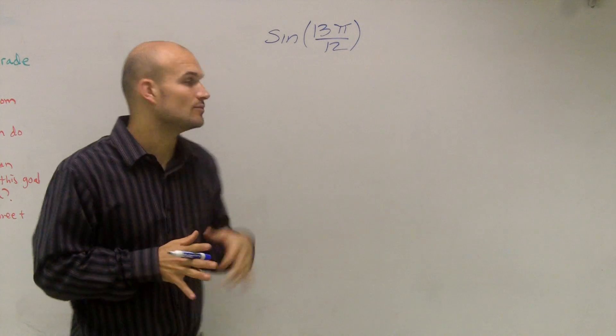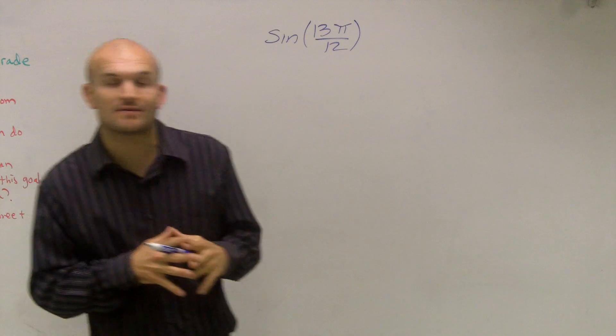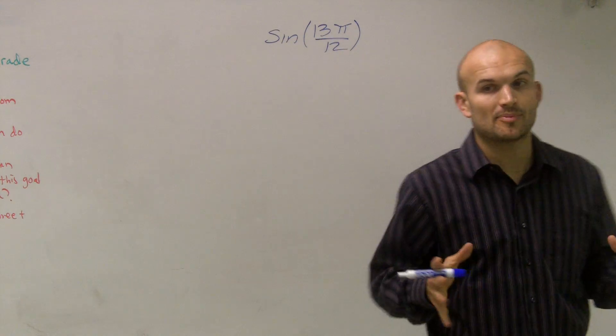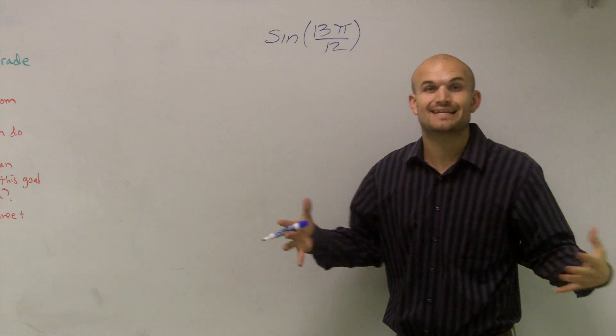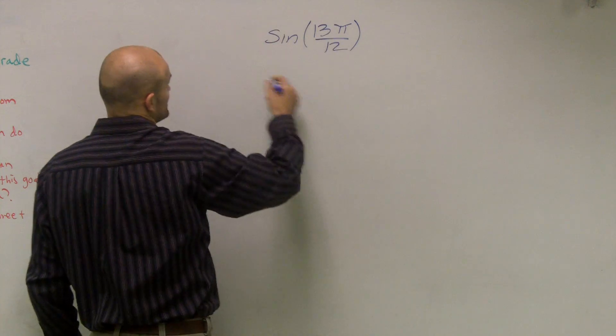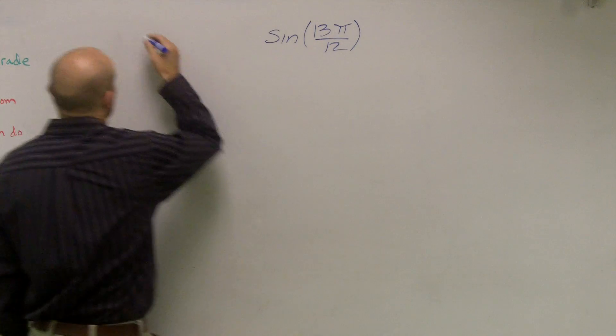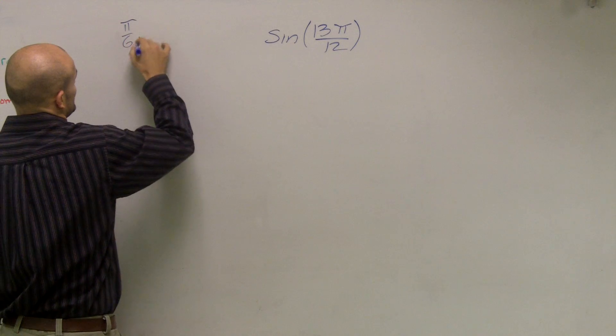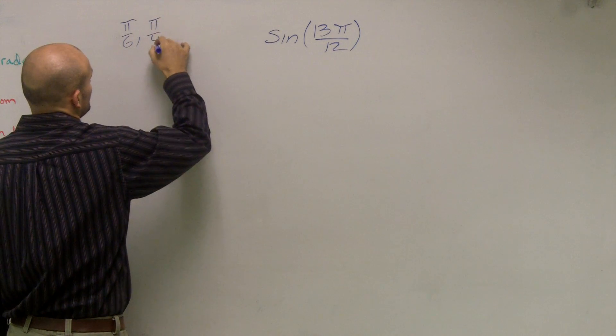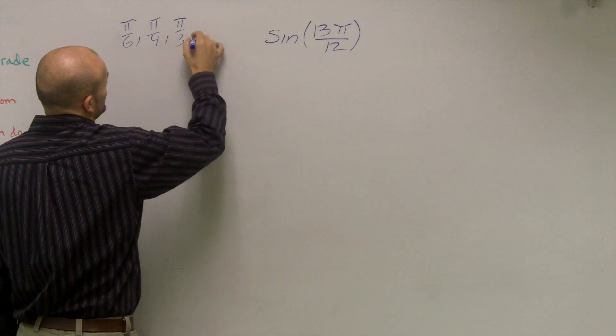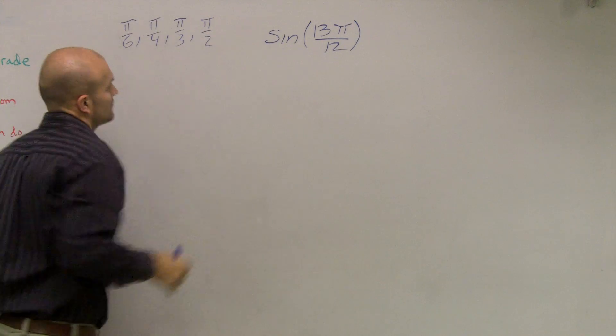So to find the approximate solution, what I'm going to have to do for sine of 13π over 12 is I'm going to have to break it up into two different solutions that I can solve for. And the solutions have to be a multiple of either π over 6, π over 4, π over 3, or π over 2.